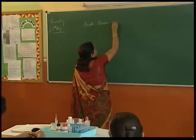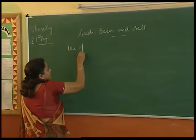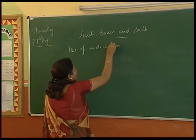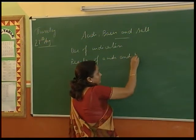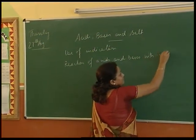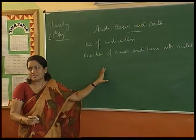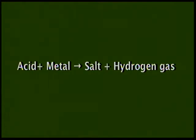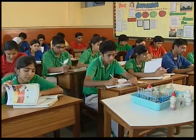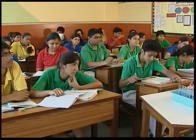One important property of acids and bases is the reaction of acids with metals. If we write a general chemical equation: a metal reacting with an acid produces salt plus hydrogen gas. Please look in the book on page 20 - we have that equation given: acid plus metal gives salt plus hydrogen gas.